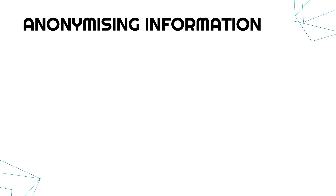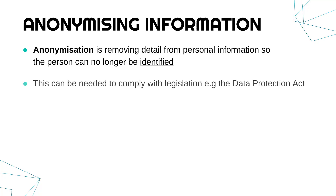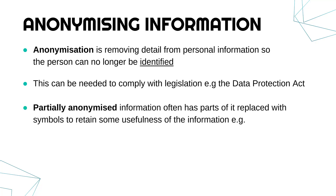Two other classifications are about anonymizing information. Anonymization is removing data from personal information so that the person can no longer be identified. Anonymous data was personal but is no longer personal because we can't identify who that person is. Companies often do this to comply with legislation like the UK's Data Protection Act. You can fully anonymize data so no one can be identified, or partially anonymize it — leaving some bits in to retain usefulness — sometimes replacing identifying parts with symbols.